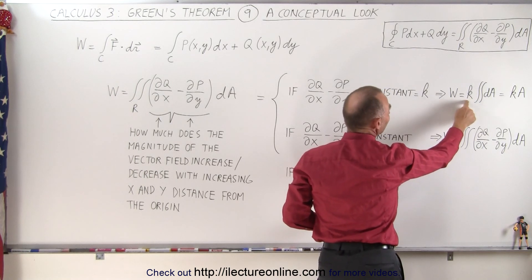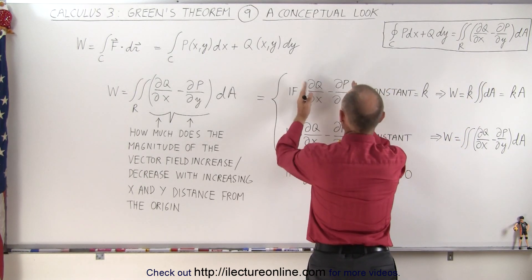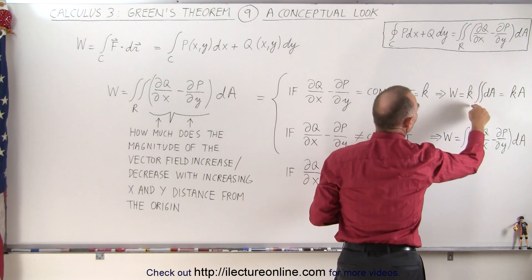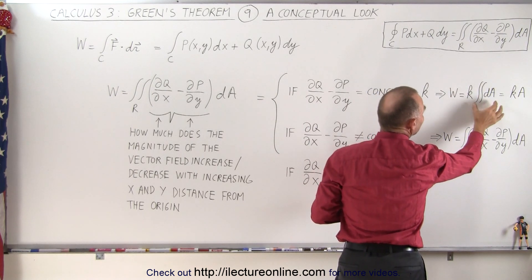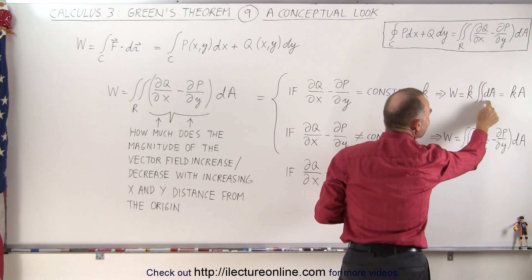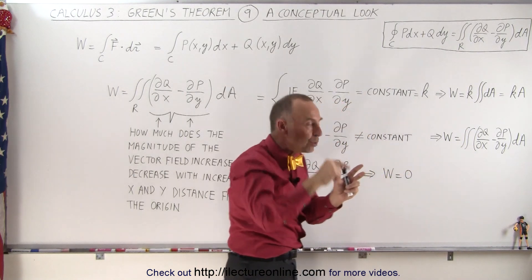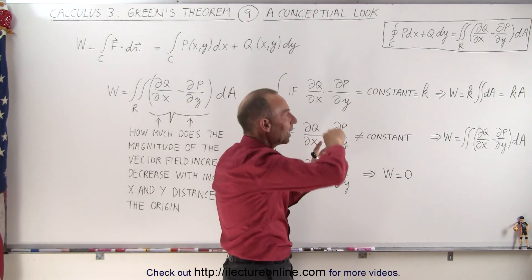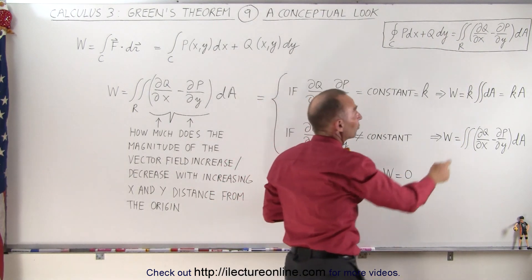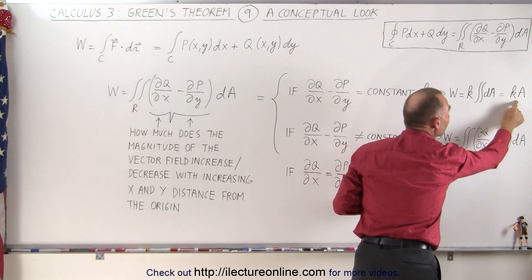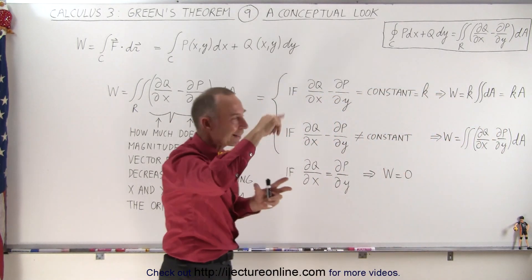And if this quantity of Green's theorem is equal to a constant, then the work done can be found by taking that constant and multiplying it times the area enclosed by that line integral.